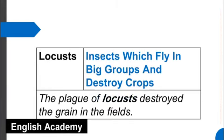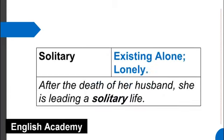Locusts means insects which fly in big groups and destroy crops. Example sentence: The plague of locusts destroyed the grain in the fields. Solitary means existing alone, lonely. Example sentence: After the death of her husband, she is leading a solitary life.